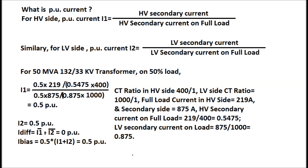For a 50MVA, 132/33kV power transformer at 50% load, I1 = 0.5 per unit and I2 = 0.5 per unit. The I-difference, being the vector sum of I1 and I2, comes to 0. The I-bias, being the average value of the sum of I1 and I2, comes to 0.5 per unit.